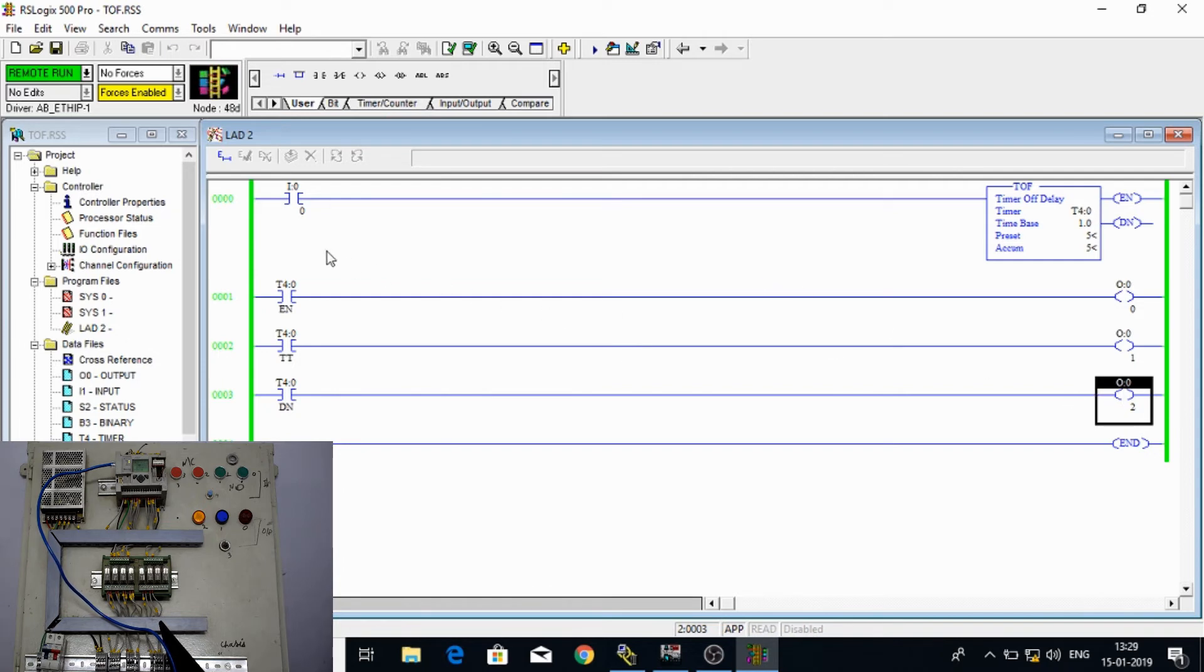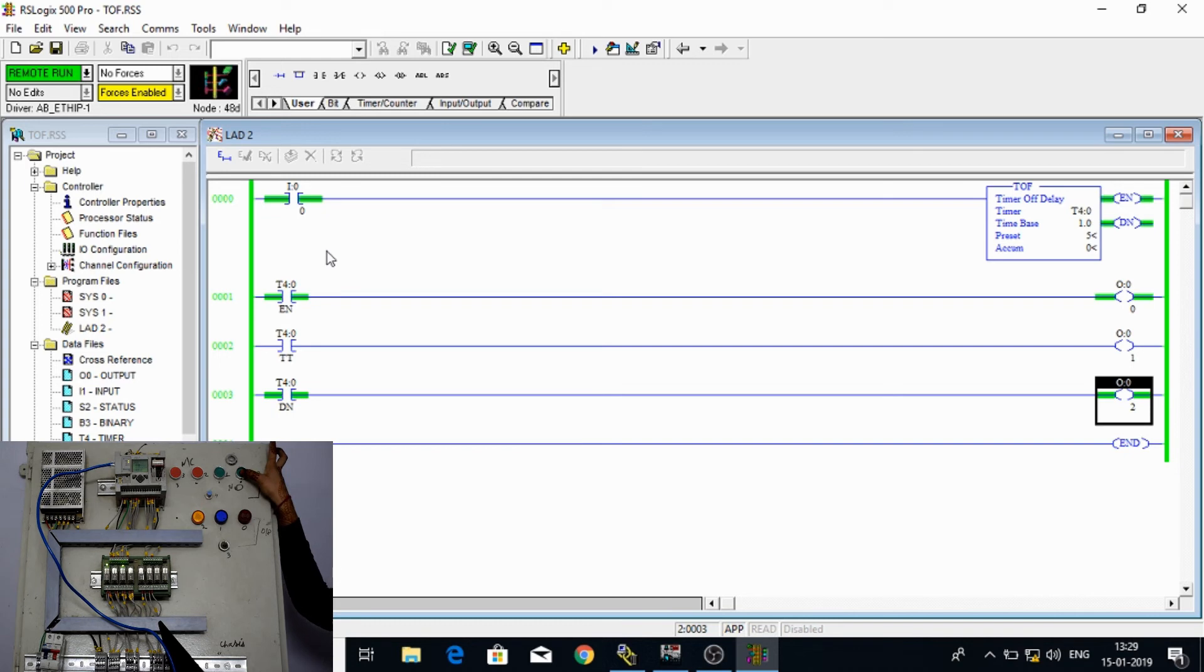Now we have studied that TOF gets starts when our rung becomes false from true. So here we can see our rung is false now and when I press our input 0 we can see timer is not getting start as that was case in TON. Here my condition will get fulfilled when my rung becomes false. And as I remove my input, as my rung becomes false we can see our timer is getting start and after 5 seconds our output gets off as we can see in panel also.